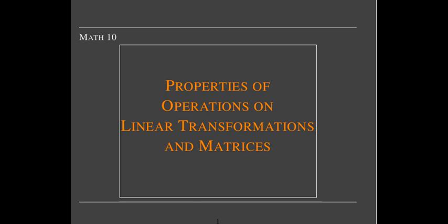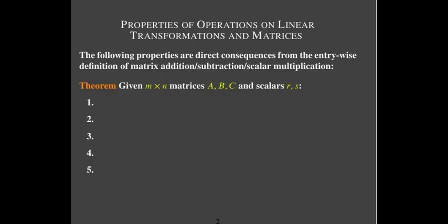In this short video we're going to talk about the properties of operations on linear transformations and matrices. We're talking about arithmetic properties, and in many ways linear transformations and matrices behave the same way as real numbers. For example, with addition we have a commutative property — the sum of matrices can be formed in any order: a plus b is the same as b plus a.